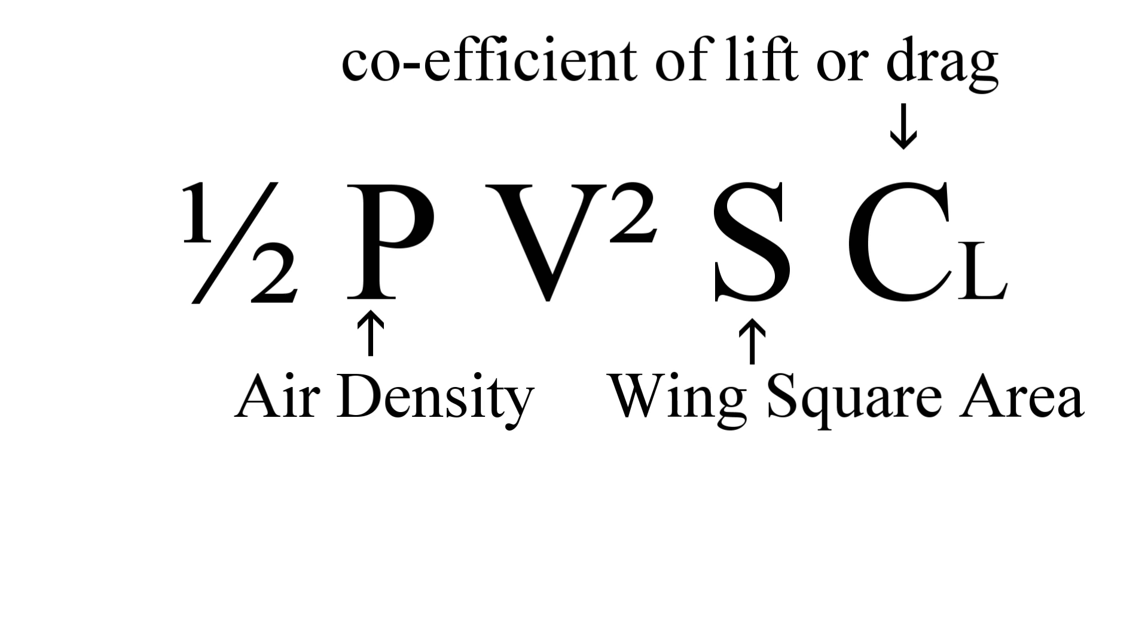Each of these factors will affect the lift or drag in direct proportion to their value. Half the air density, you get half the lift. Double the square of the wing, you get twice the lift, and so on.